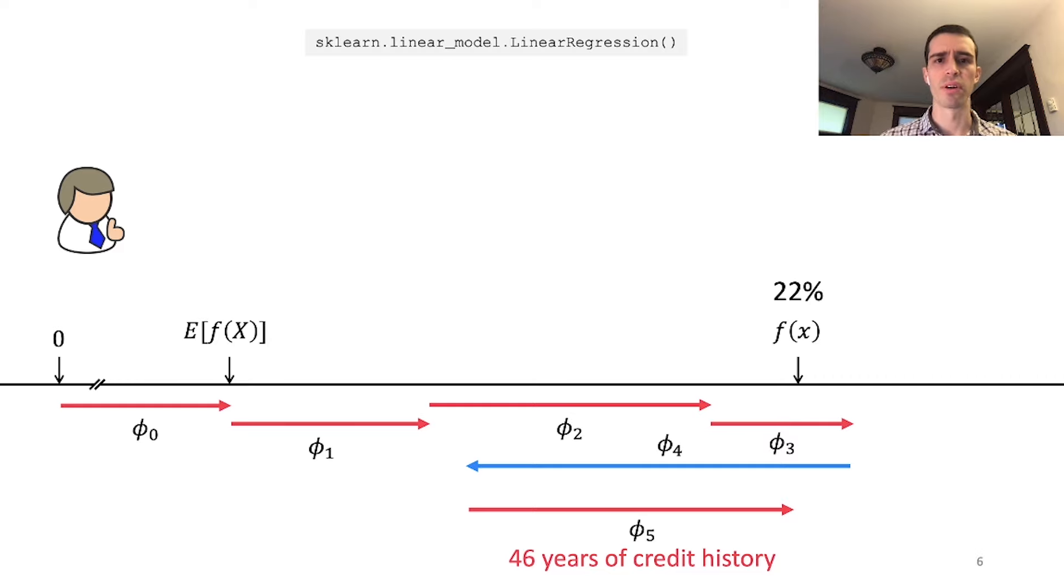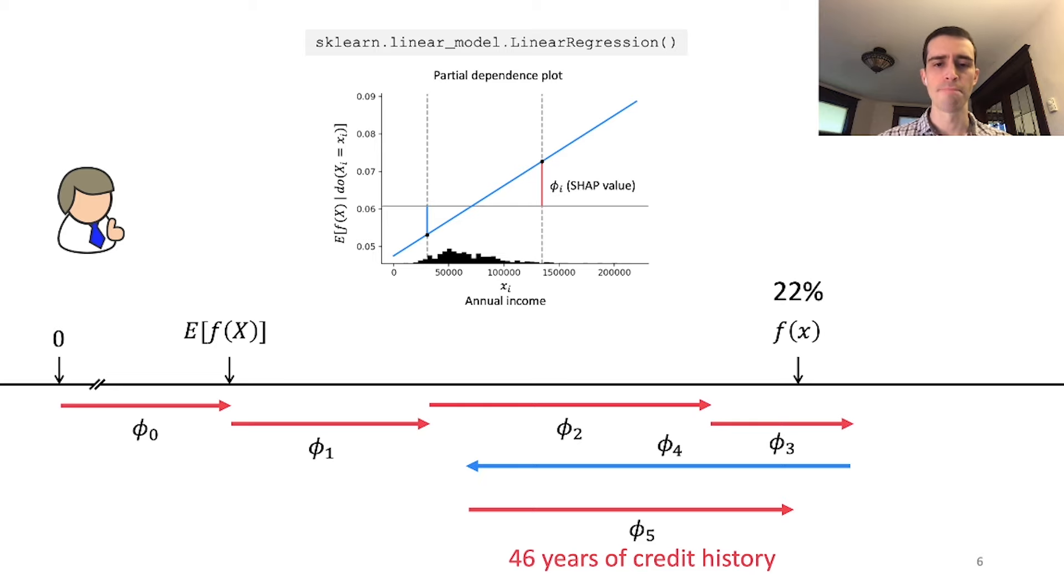Let's see how this works for a simple linear regression model from scikit-learn. Here's a model trained on this lending dataset. I'm showing a straight line representing the partial dependence plot. On the x-axis is the feature—in this case, annual income. On the y-axis is the expected value of the model's output when we change one feature, which for a linear model is a straight line. I want to highlight how easy it is to read off the SHAP value from a partial dependence plot. The gray line is the average output of the model—the prior base rate we discussed.